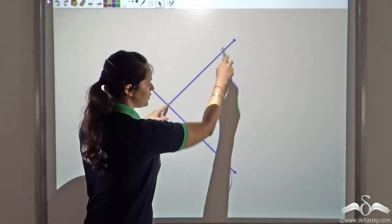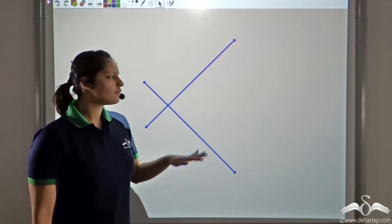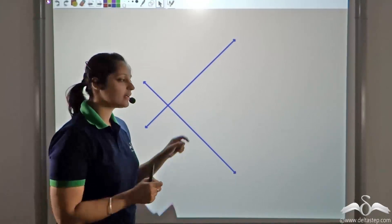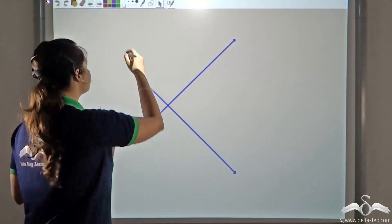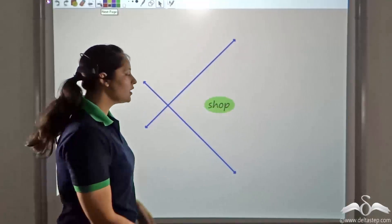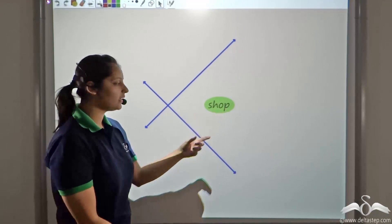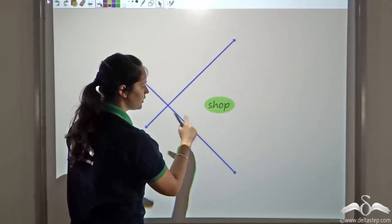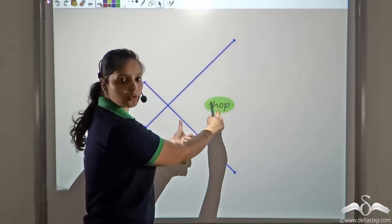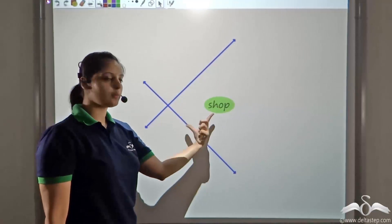Let us say that these are two busy roads and you want to open a shop near these two busy roads. Where will you open that shop? If you want to open a shop, you would definitely want as many customers as possible. You would want your shop to be equidistant from both these roads, so that people from either road can come to your shop equally.